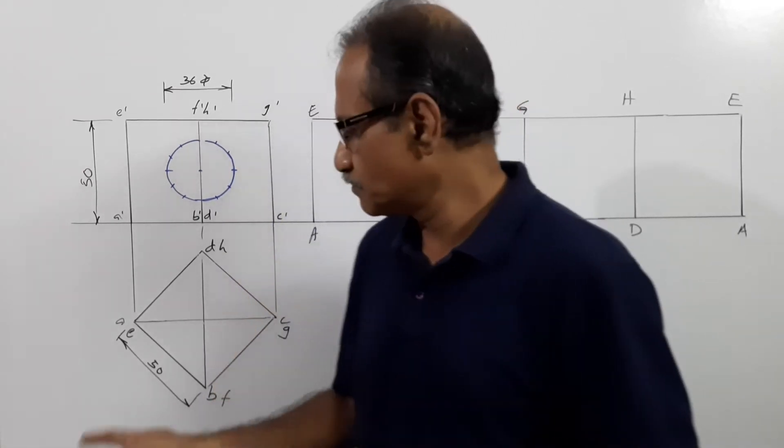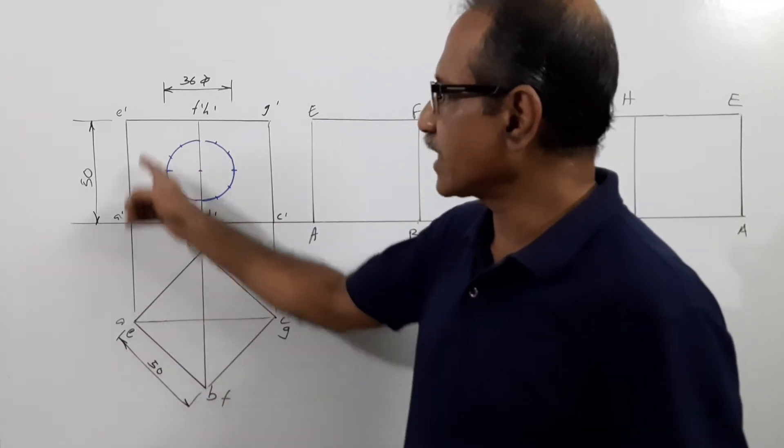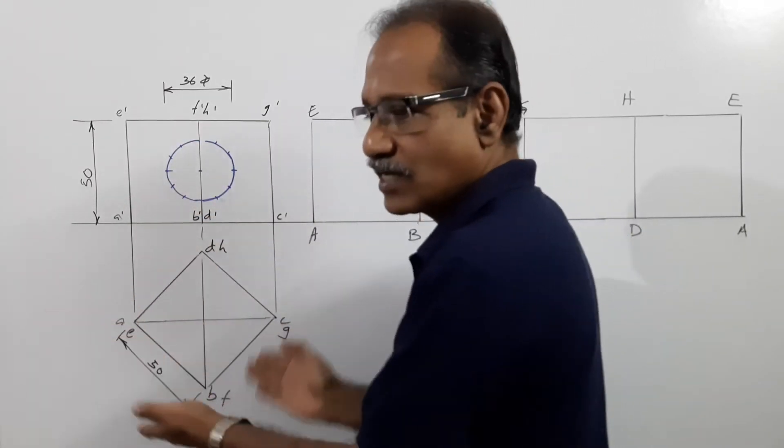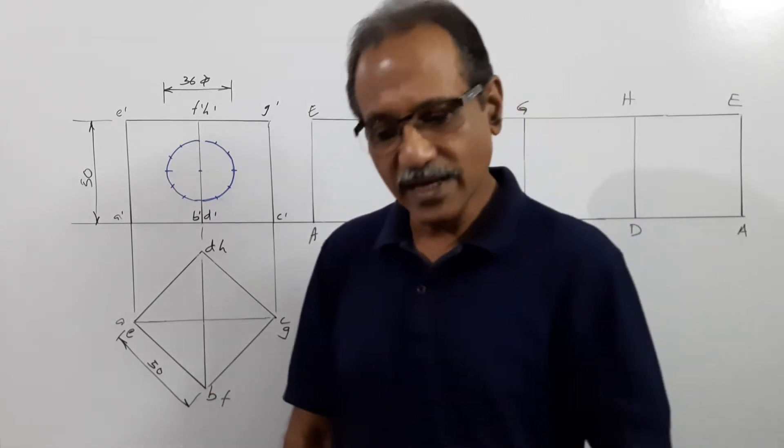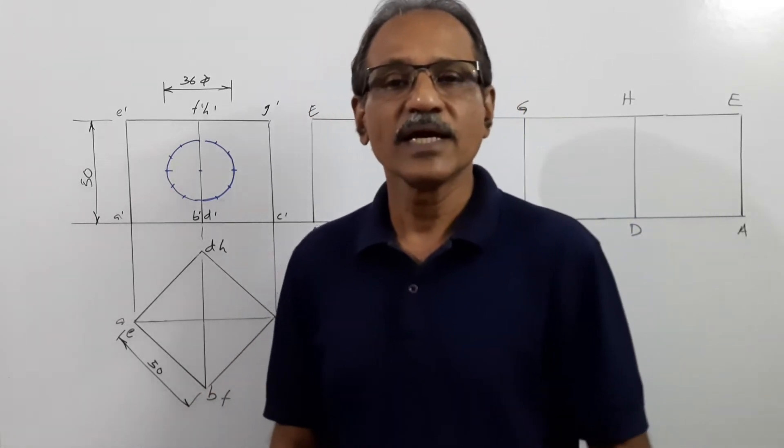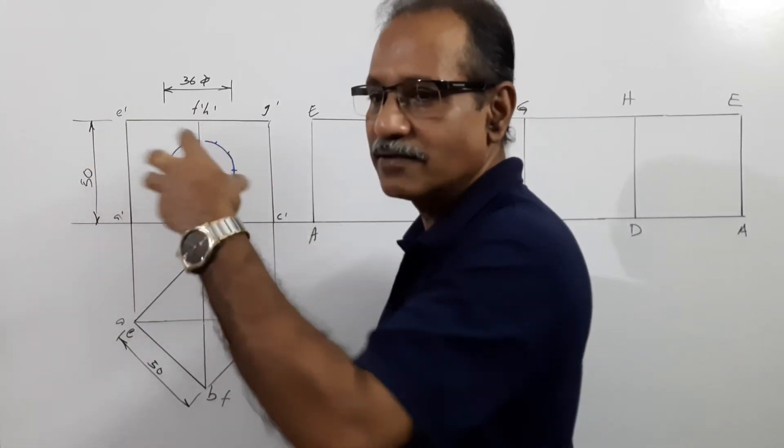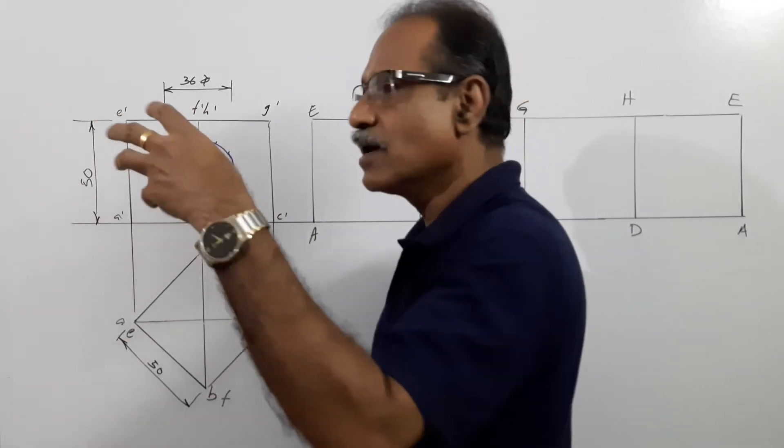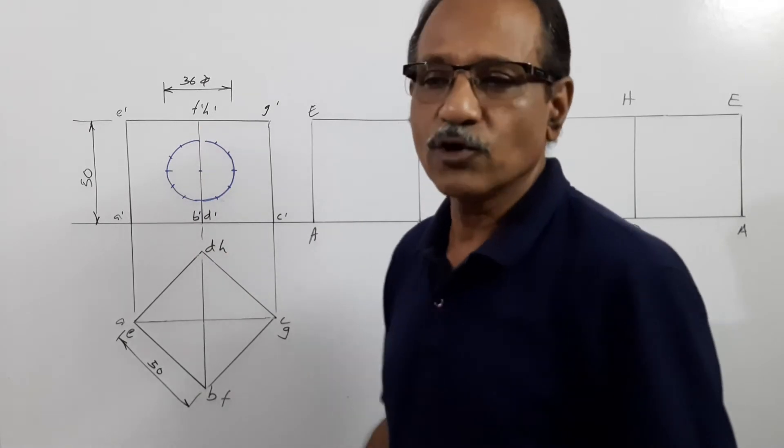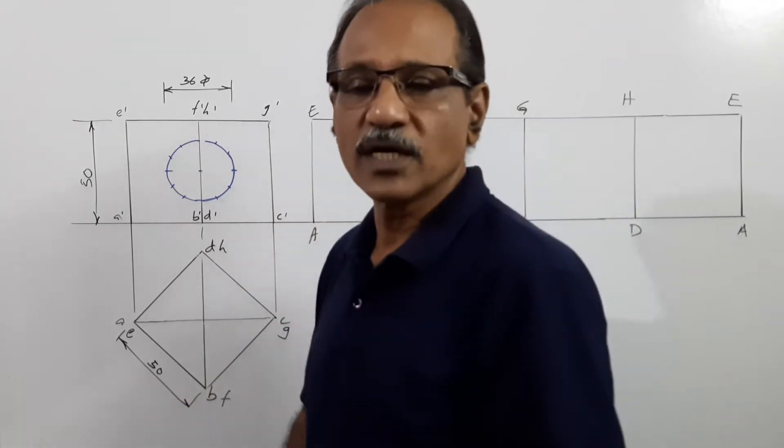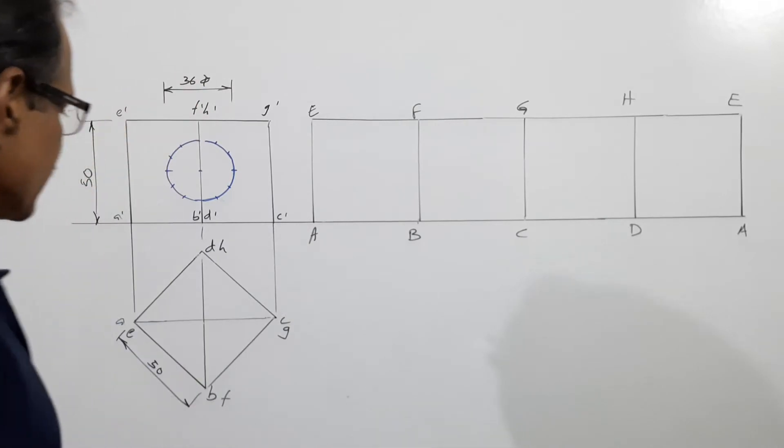The cube is 50mm side with all lateral faces equally inclined to VP, resting on the ground. It has a hole 36mm diameter drilled with its axis perpendicular to VP, passing through the center of the cube. You are asked to draw the development of lateral surface of the cube.